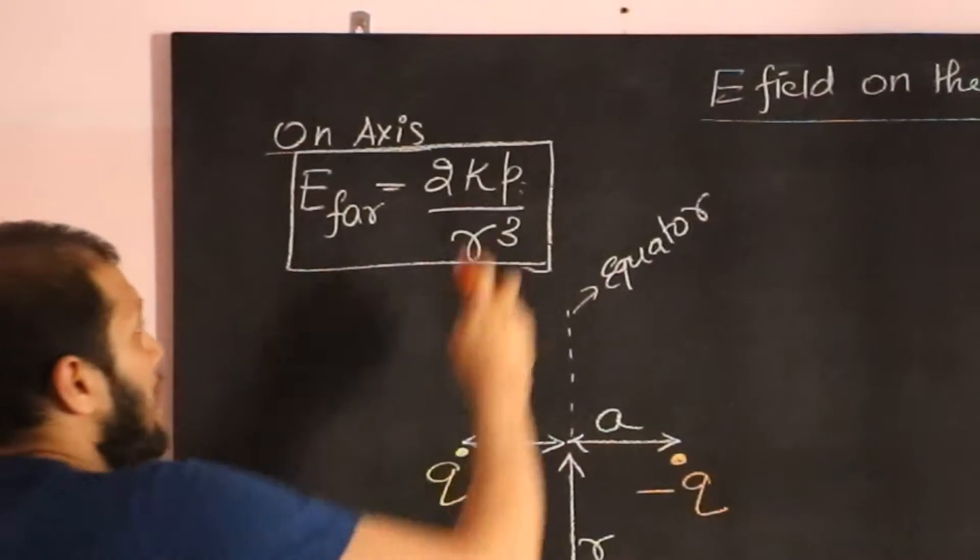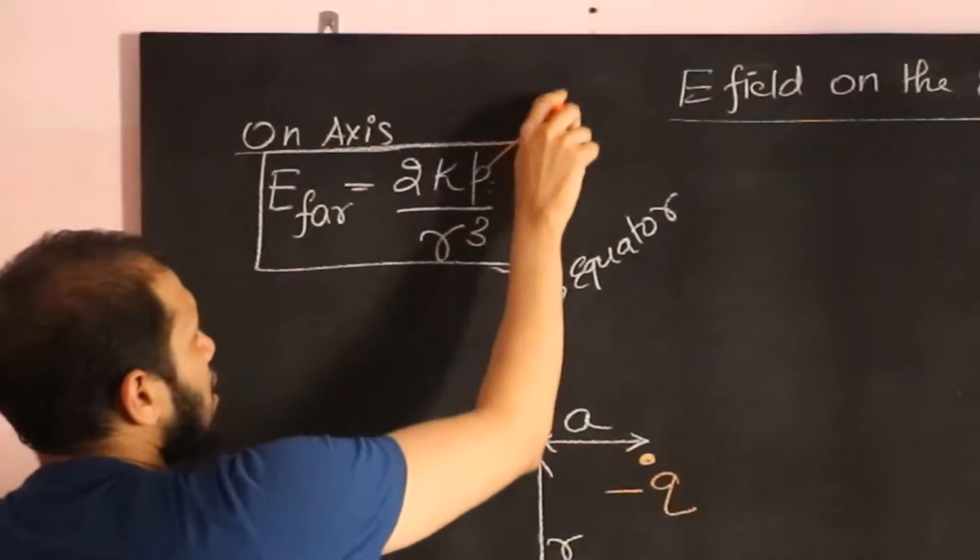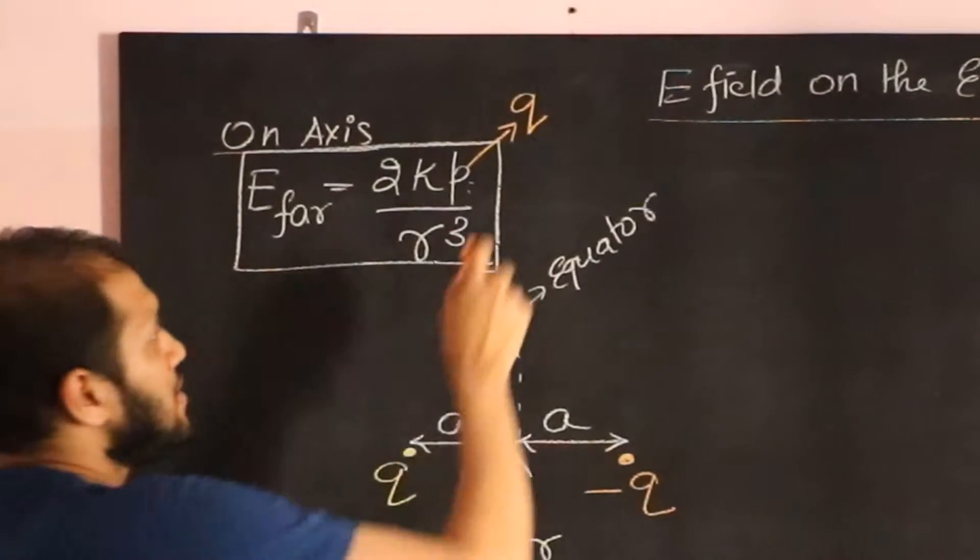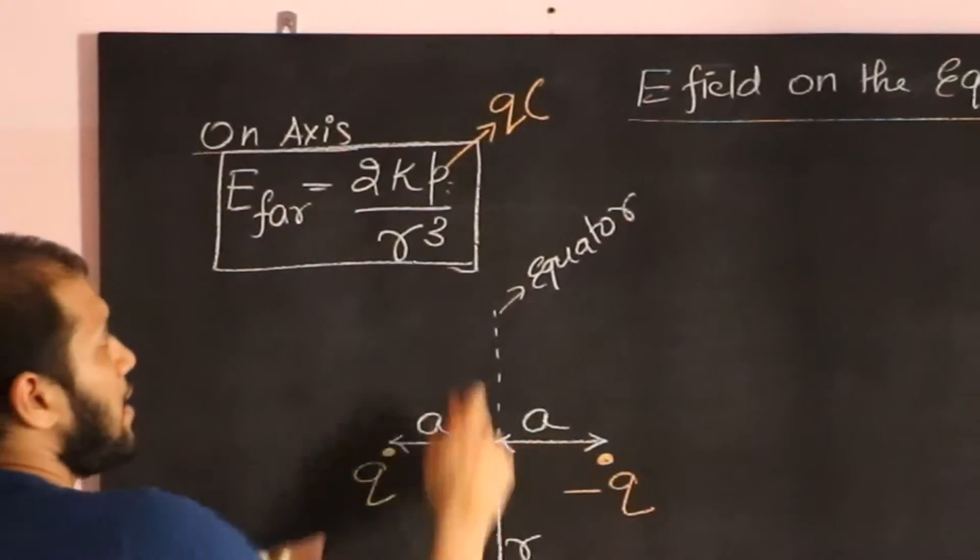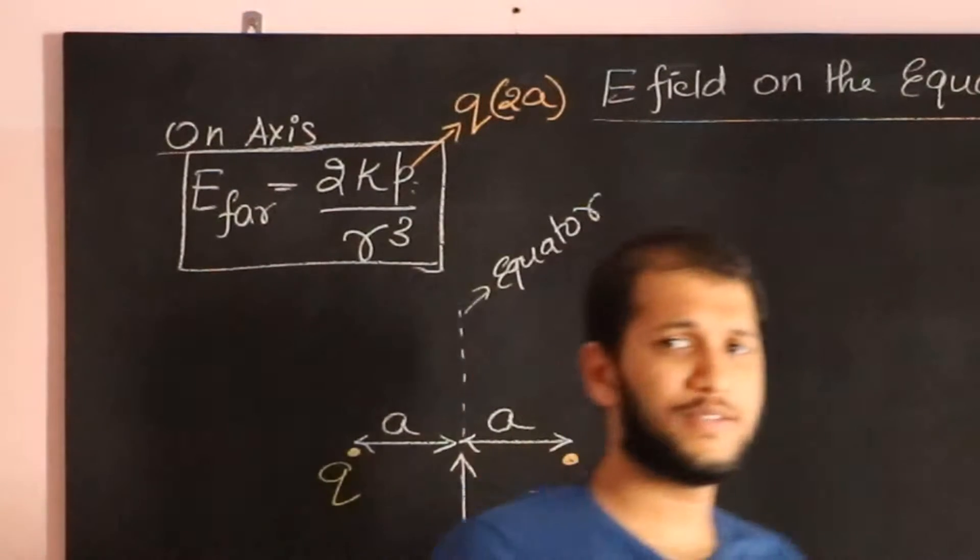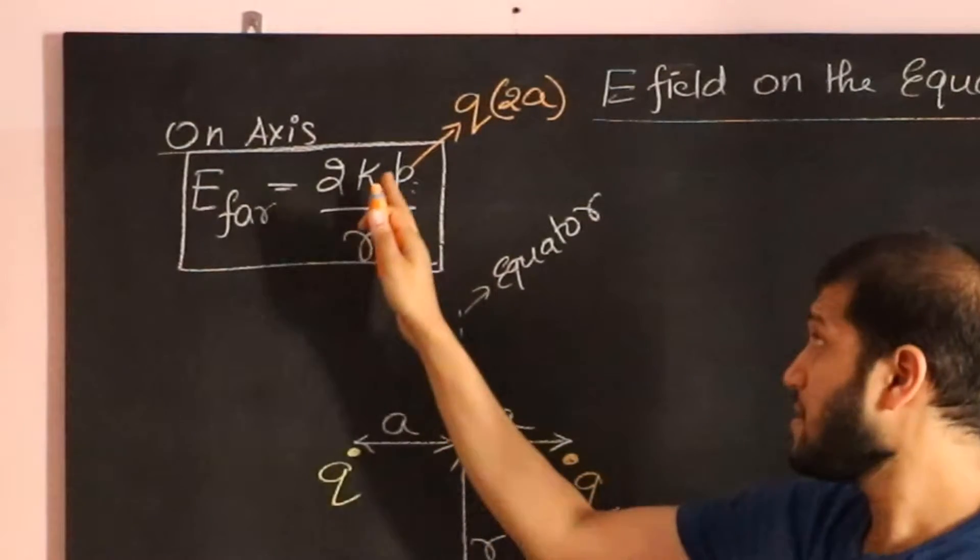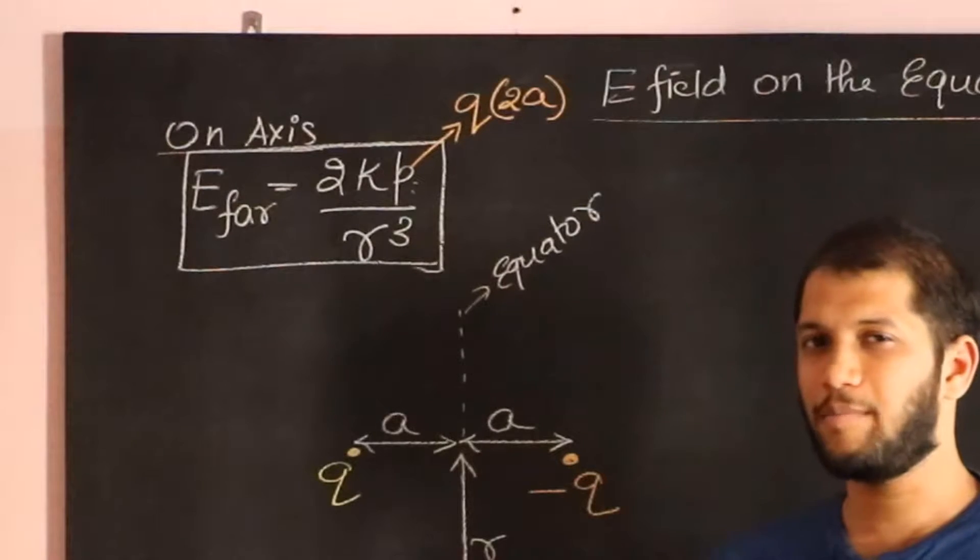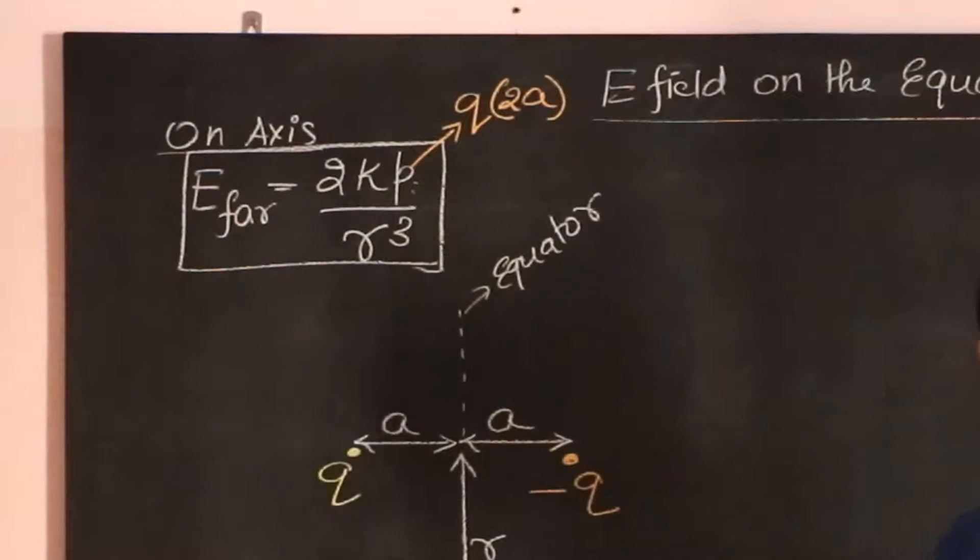We discussed all the properties of a dipole and how the dipole moment is the identity of a dipole. Today we're going to talk about electric field on the equator of the dipole.